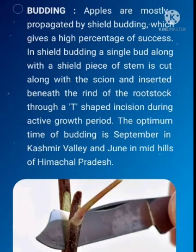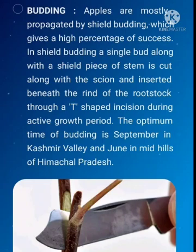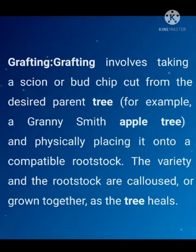Propagation techniques. Apple trees can be propagated by means of budding. Apples are mostly propagated by shield budding which gives a high percentage of success. In shield budding, a single bud along with a shield piece of stem is cut and inserted beneath the rind of the rootstock through a T-shaped incision during the active growth period. The optimum time of budding is September in Kashmir valley and June in mid hills of Himachal Pradesh.